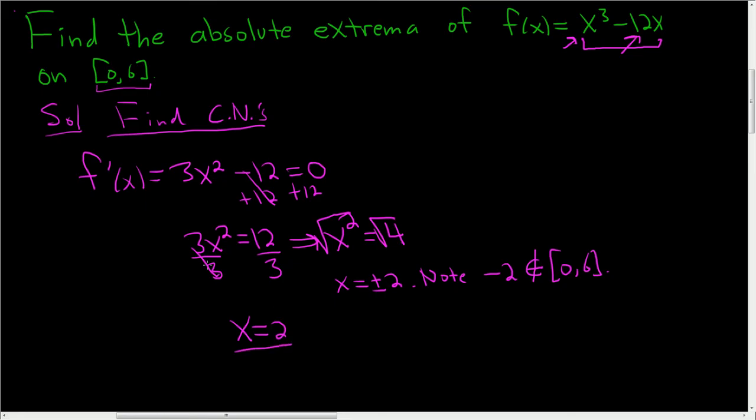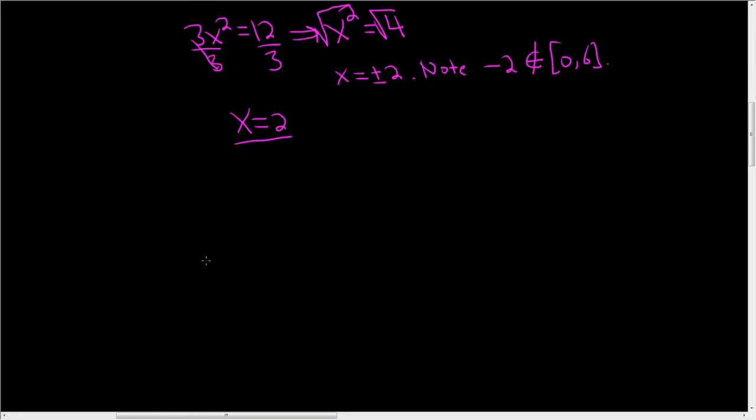The second step is to go back to the original function. So I'm going to write the original function down again. So we had f of x equals x cubed minus 12x, and we are going to plug in three numbers.